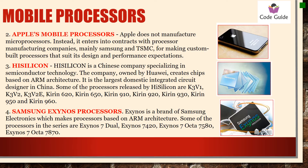Next is Apple's mobile processor. Apple does not manufacture any microprocessor itself; instead it enters into contracts with processor manufacturing companies. It mainly has contracts with Samsung and TSMC for making custom-built processors that suit its design and performance expectations, and it has a series of mobile processors for its mobile phones.